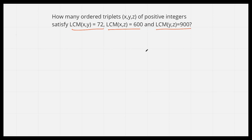So these are the three given conditions that we have: LCM(x,y) = 72, LCM(x,z) = 600, LCM(y,z) = 900. If you want to give the problem a try, then pause the video, else continue watching for the solution.